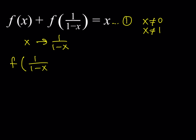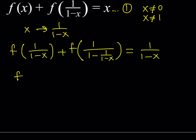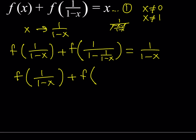f(1/(1-x)) + ... now, if you replace x with 1/(1-x) in the second expression, you get 1 over (1 - 1/(1-x)). Simplifying that: making a common denominator gives 1 minus x minus 1 over 1 minus x. The 1s cancel out, leaving negative x over (1-x). But we have the reciprocal of this term, so it becomes f((1-x)/(-x)).